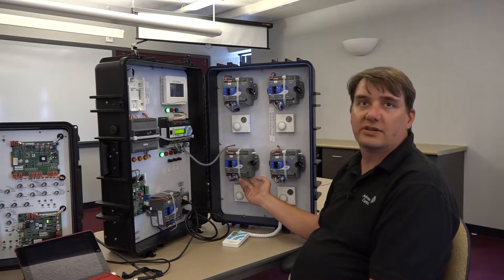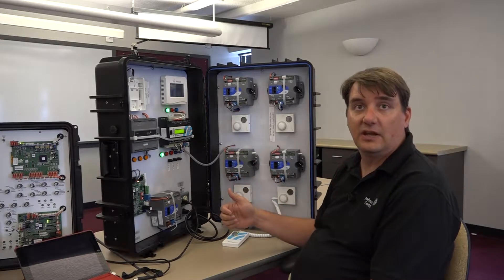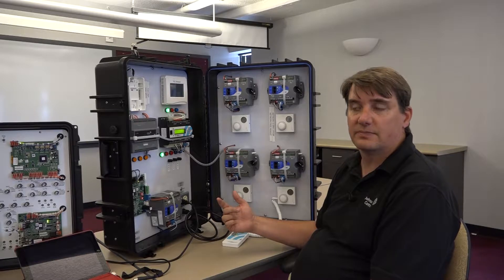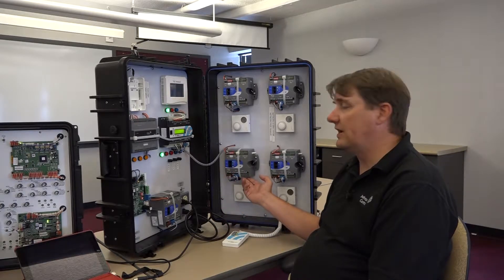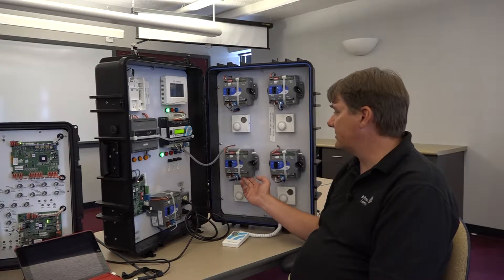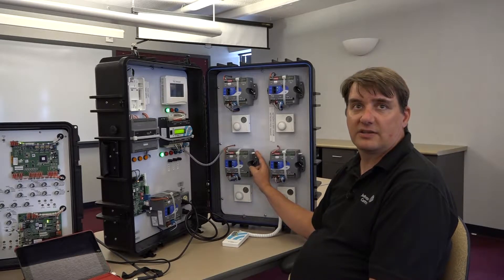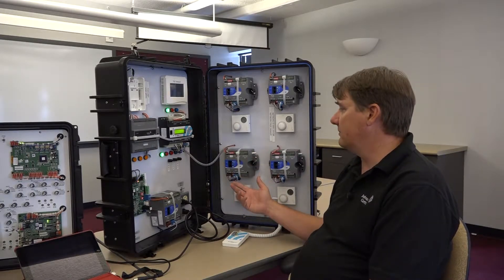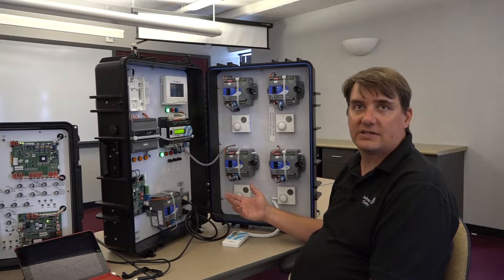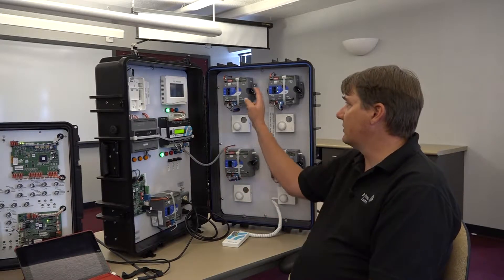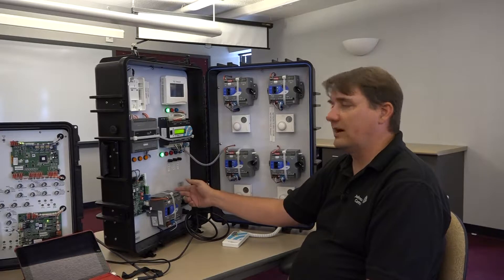Our ZEC410 series is used for either VAV or changeover bypass system. It's for VAV controllers and the difference with it is it does have pressure ports to calculate flow and be used for a VAV box. So our zone damper and our bypass damper do not have pressure ports.